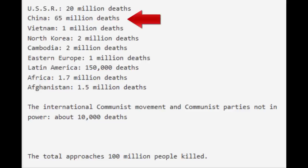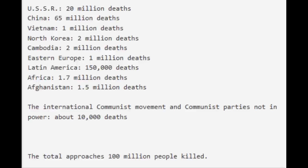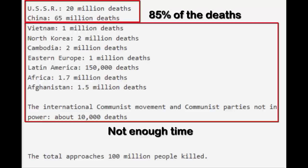Here it is: 65 million in China, 20 million in the USSR — and to refute Prager, yes, that is including the 5 million Ukrainians. It was actually only 4 million. The PRC and the USSR make up 85% of the deaths on this list, so they're what I will focus on. Let's look at the people who died in the Soviet Union. Here is what Courtois lists as the crimes that happened in the USSR.